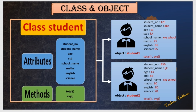A class will have both attributes and methods. Attributes are the ones which we have defined now. I can also define methods inside the class. What is a method? It is nothing but a function inside a class. In my example, I am going to create two methods which are total and average. For creating these two methods, I need to introduce three more attributes in my student class.